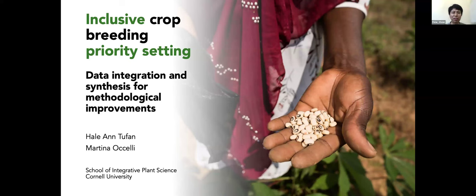Hello, good morning, good afternoon, good evening everyone, wherever you are. It's a pleasure to have you today with us on this webinar on inclusive crop breeding biology studies. We will be talking about data integration and synthesis for methodological improvements. This is a work that emerges out of a very close collaboration between Cornell University, the Excellence in Breeding platform, and there is an entry point and a connection line with much of the research taking place in the CGIAR and with partner institutions today. Thank you for joining us. Welcome to Hale Tufan and Martina Ossinelli, coming from Cornell University.